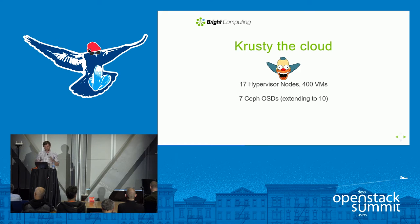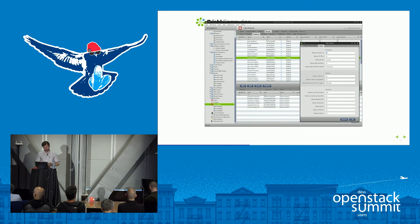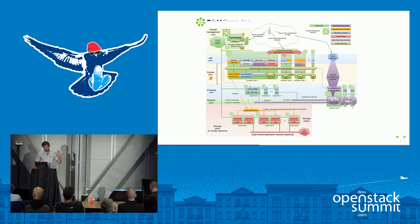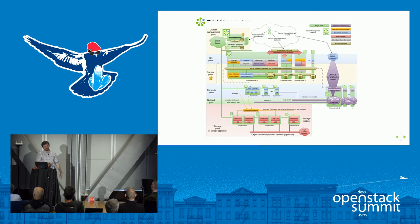Our private cloud — we call it Crusted Cloud — is about 17 hypervisor nodes and around 10 Ceph OSD nodes, with plans to extend shortly. At any given time we have about 400 VMs running, which amounts to approximately 400 fairly small clusters — enough for development work. The management interface is used by both cluster administrators and end users provisioning clusters, since we use the same software to manage both the physical and virtualized cluster layers.